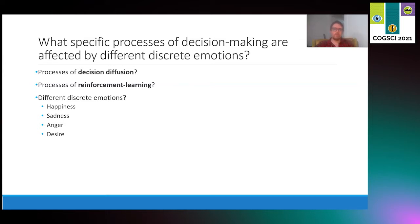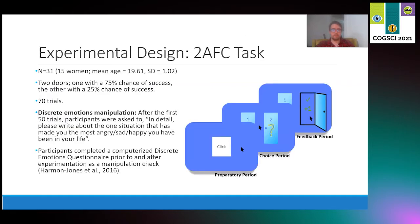This idea here is something that my team and I were interested in exploring further. We were interested in how processes of decision diffusion and reinforcement learning were affected by different discrete emotions. We were particularly interested in how those two processes could be affected by different discrete emotions. For those emotions, we chose four: happiness, anger, sadness, and desire. There are many others we could have chosen from. We chose those four specifically because they differ in valence and intensity.